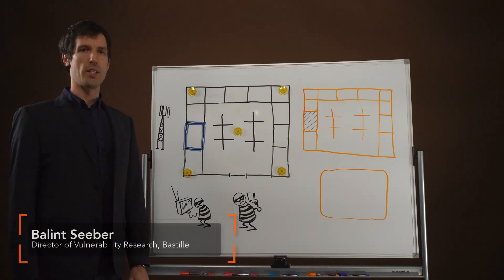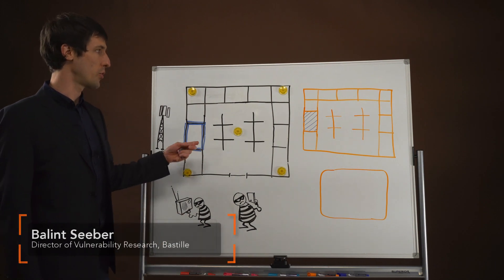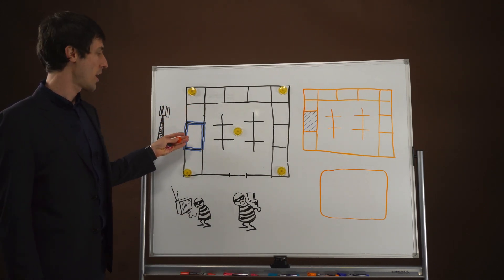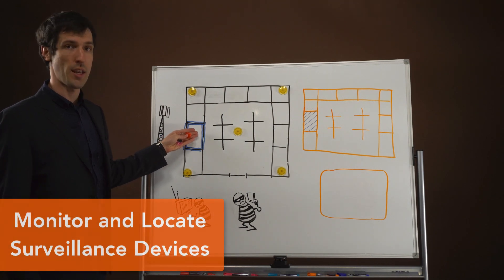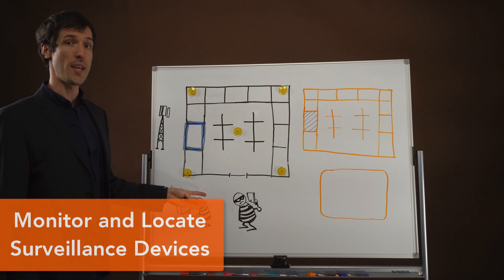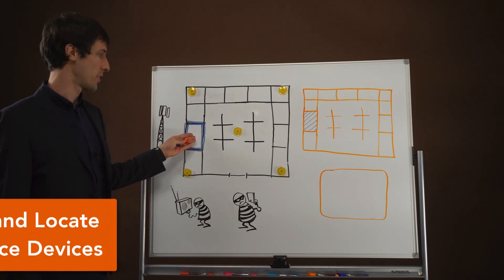Hello, my name is Balint Sieber and I'm the Director of Vulnerability Research at Bastille. I'd like to show you how you can use the Bastille solution to monitor for surveillance devices that may be surreptitiously placed in boardrooms or C-suites where an attacker wants to overhear sensitive conversations that are taking place.